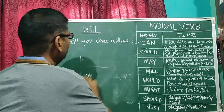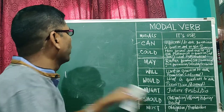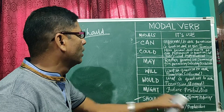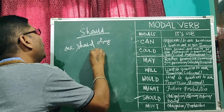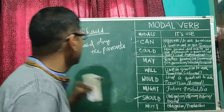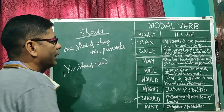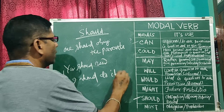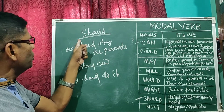Now, should. Should is used for obligation — for example: one should obey the parents. It is also used for offering advice — for example: you should read. And it is used to express being bound to something — for example: I should do it. So in these meanings — obligation, offering advice, and being bound — we use should.